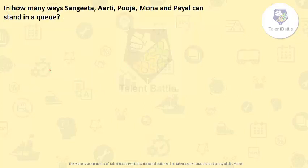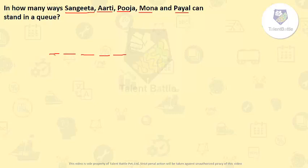In how many ways can Sangeeta, Aarti, Pooja, Mona, and Payal stand in a queue? There are 5 girls who have to stand in a queue, so we can consider 5 positions. There is no restriction on who can stand where.